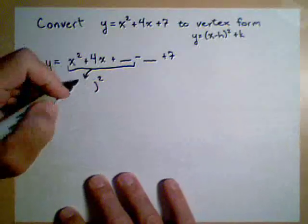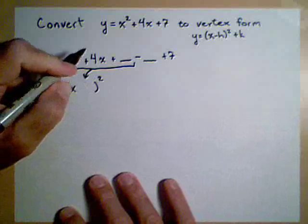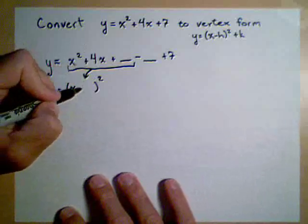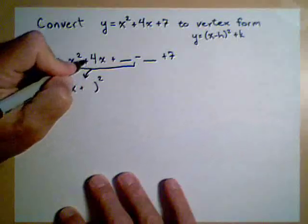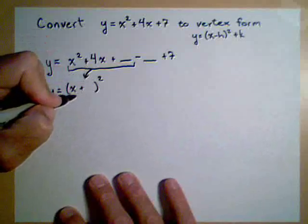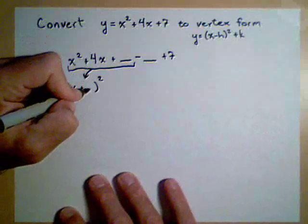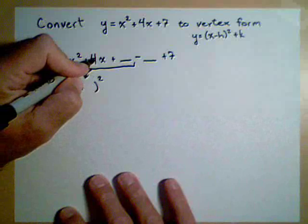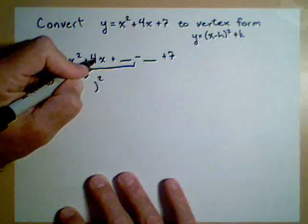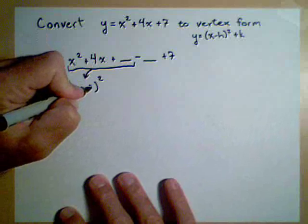Now, this will always be x. The sign here determines the sign here. If this is plus, then this is plus. If this were minus, then this would be minus. The number that goes here is exactly half of this number every time. So we cut 4 in half and we get 2.